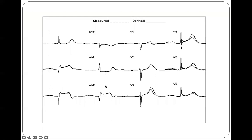In this ECG, the QT interval is shown. If you compare it with the RR interval, it is less than half of it, so roughly it is shortened. When you calculate the QTc, it will be less than 350 milliseconds.